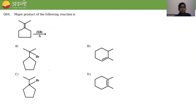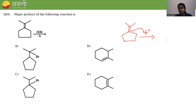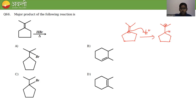Question 66: find the major product of an alkene (cyclopentane ring with alkene) reacting with HBr and strong heat. First step is protonation — the alkene attacks the hydrogen and a carbocation forms.